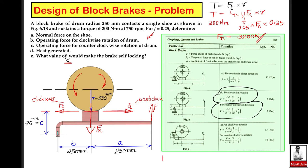From the normal force, we can directly evaluate the tangential force, which is required for solving the next two sub-parts. The tangential force ft = μ × fn = 0.25 × 3200 = 800 newton.